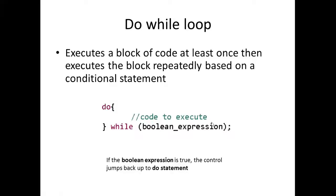The loop executes repeatedly until this condition is no longer being met. Another thing to take note of is that if the boolean expression is true, the control jumps back to the do statement. So basically, if the while condition is true, the control jumps back to the do statement — that's pretty much how that works.